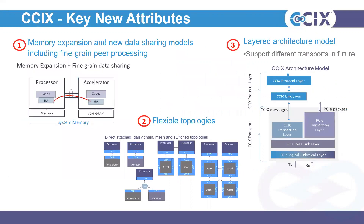The other thing about CXL — if we look at the key elements, we typically focus on three main areas. The first is the new data sharing model with cache coherency. Here on the upper left you see a processor, an accelerator, and both sides have caches and both sides have memory. You can run a single operating system on these types of devices, and the processor and accelerator can share and cache the memory on both sides. This really enables fine-grained peer processing between those processor and acceleration elements.